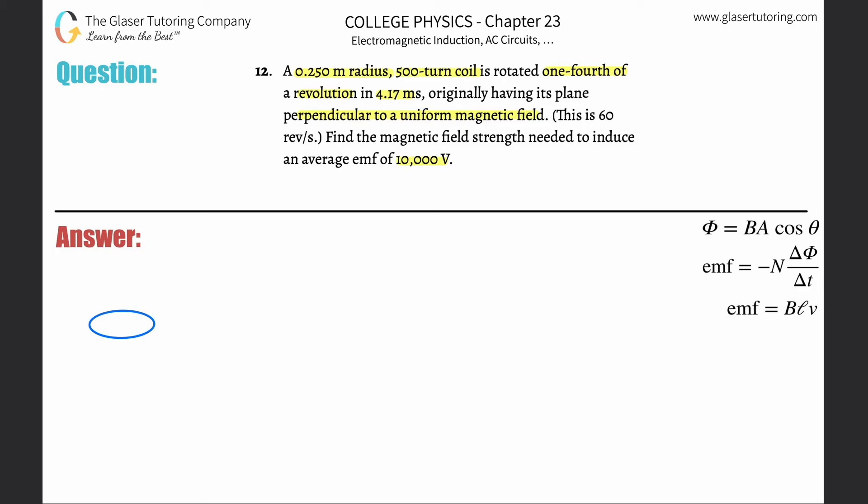Originally having its plane perpendicular - okay, perpendicular. Here's the plane, here's the magnetic field, let's just assume it's pointing straight up. We notice here that the normal of that loop is going to be pointing up, so it's a zero degree angle. Check out number 11 for an explanation.